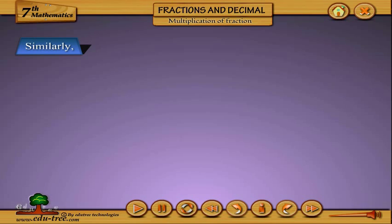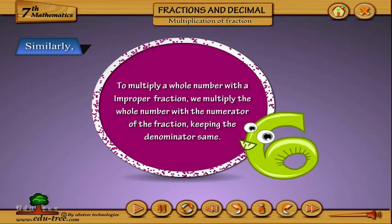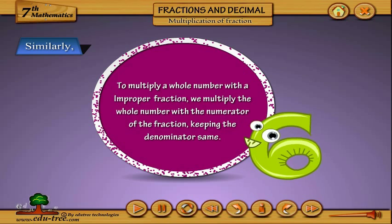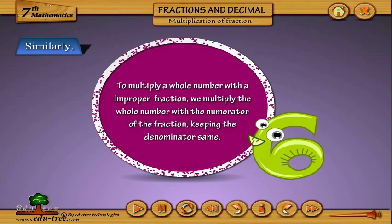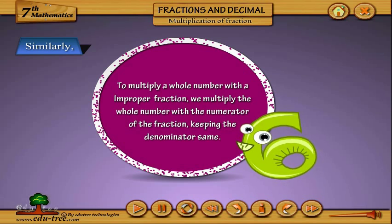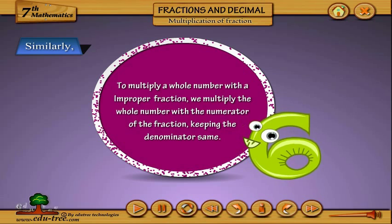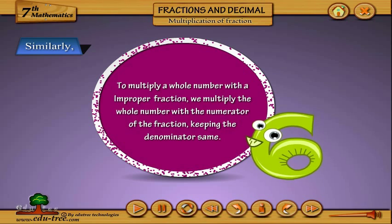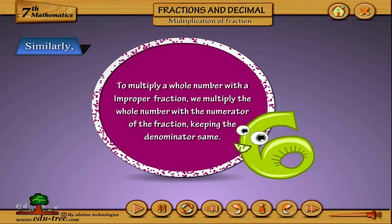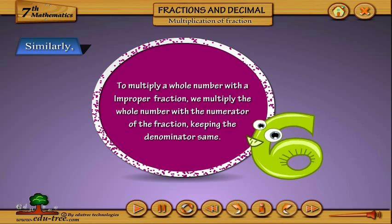Similarly, to multiply a whole number with an improper fraction, we multiply the whole number with the numerator of the fraction, keeping the denominator the same.